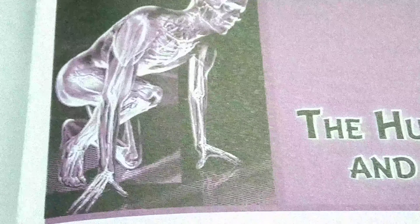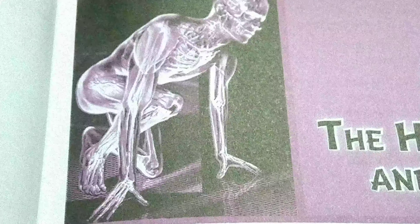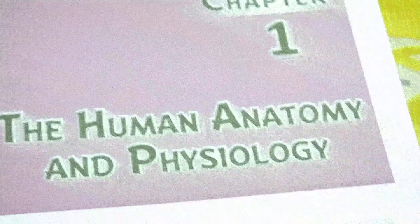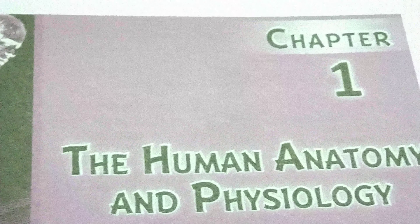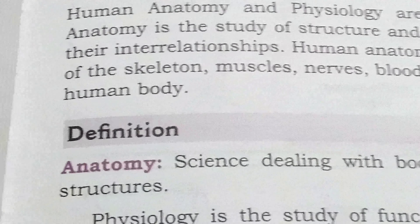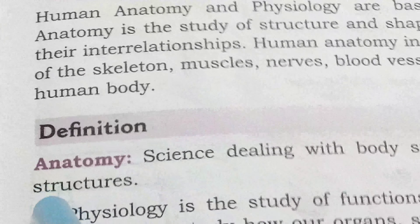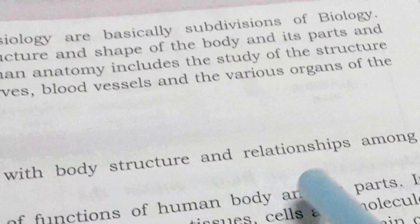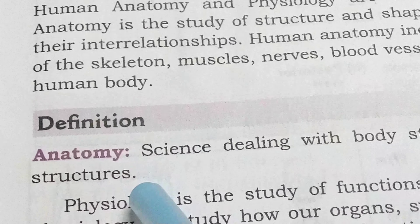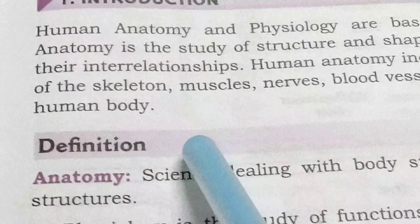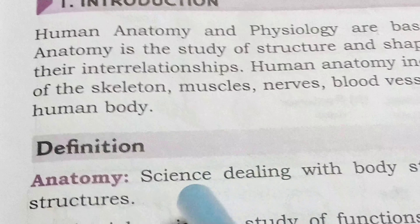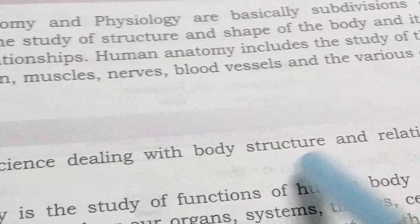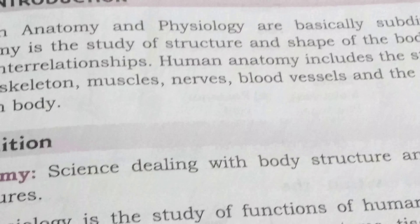Good morning, class 9. This is your physical education class. Let's start the first chapter: Human Anatomy and Physiology. First definition — what is anatomy? Anatomy is a branch of biological science which deals with the body structure and the relationship between the different structures.